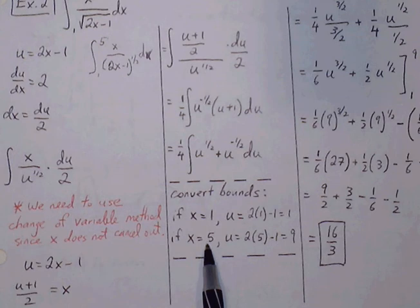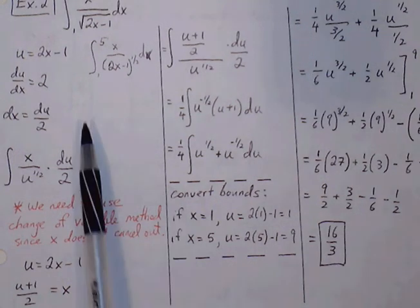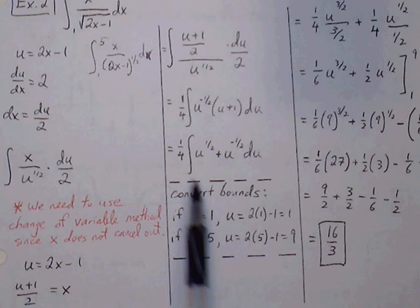5 is my initial upper bound, so plug 5 in for the x. So 10 minus 1 is 9. So my new upper bound is 9.